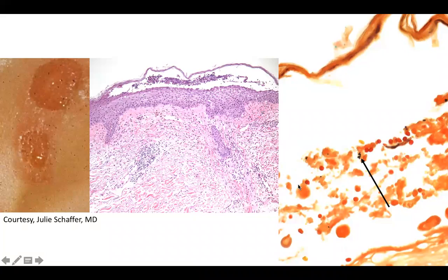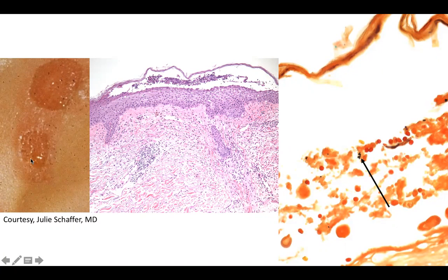Welcome back to DP60. Today we have a CPC of tense blisters. These are both blisters. They look translucent and they do not have that much erythema around the base.